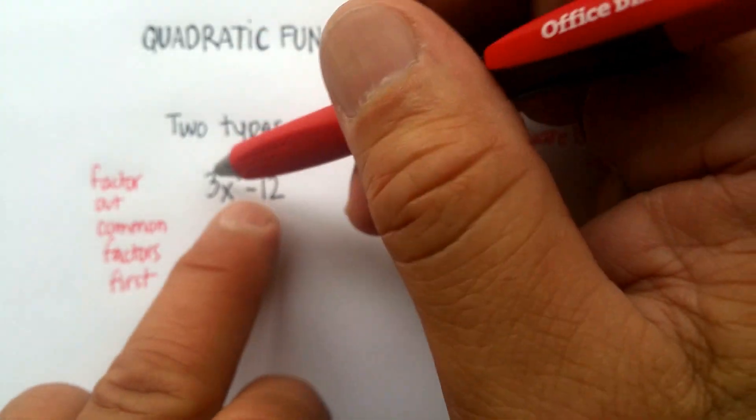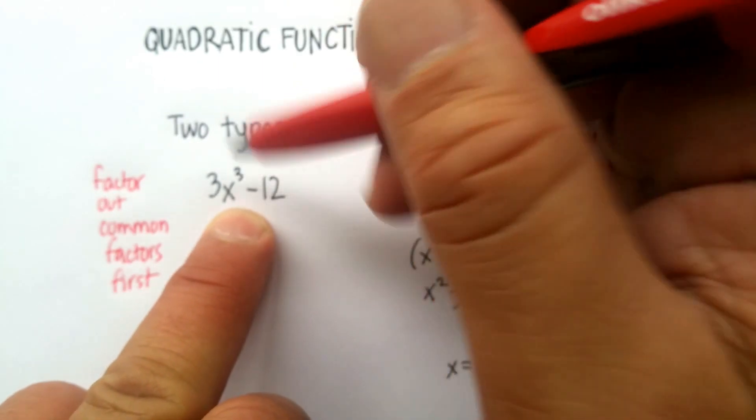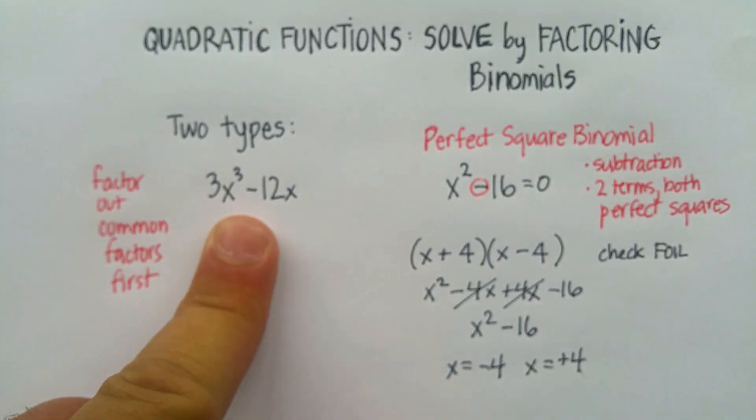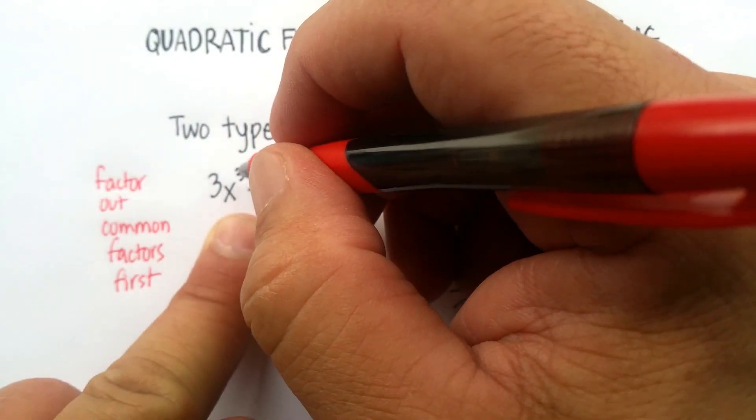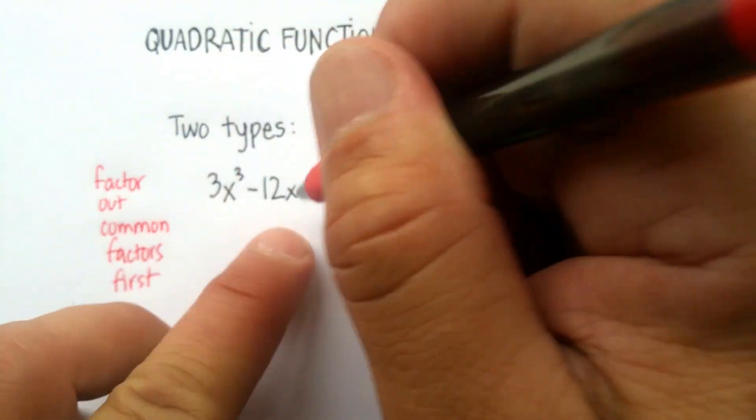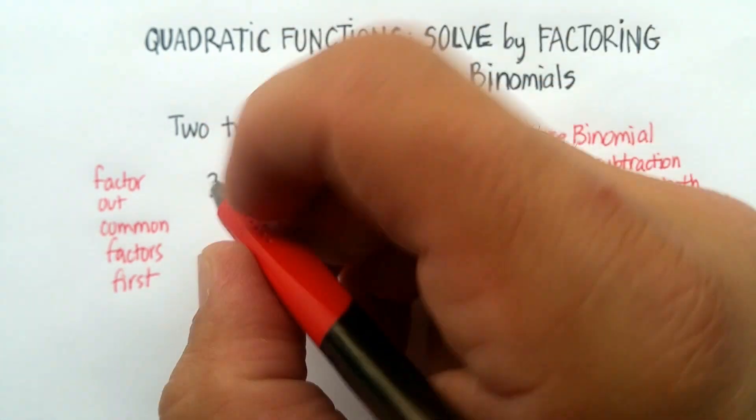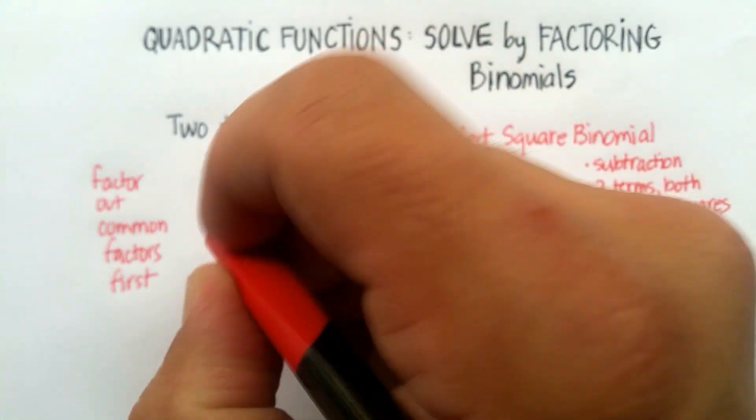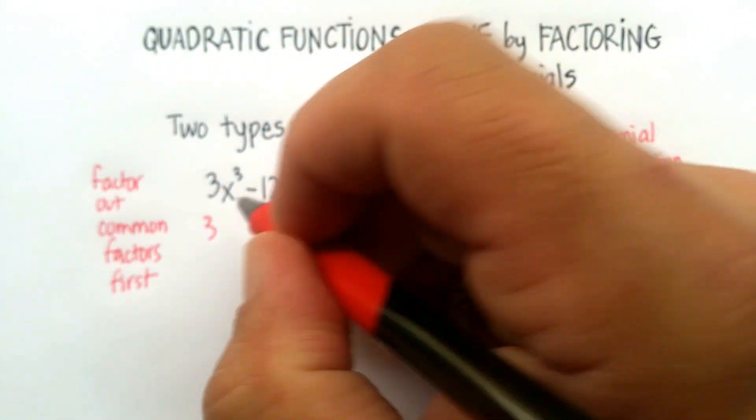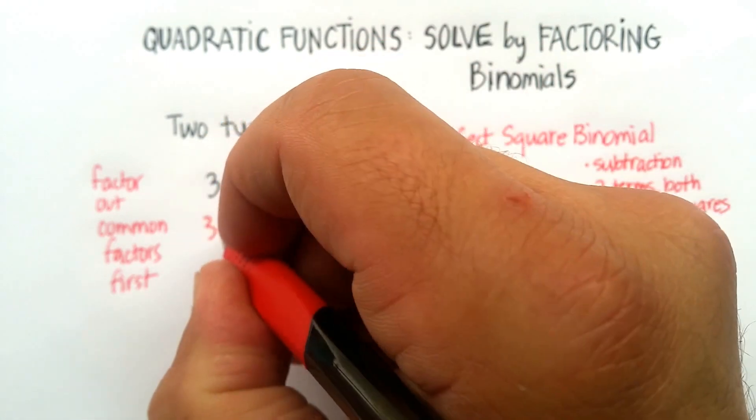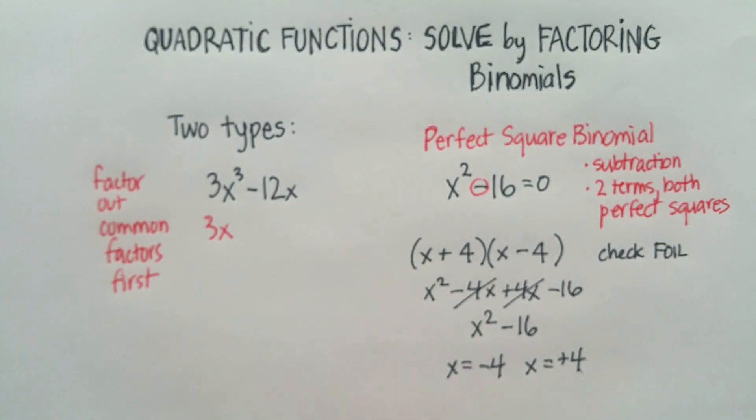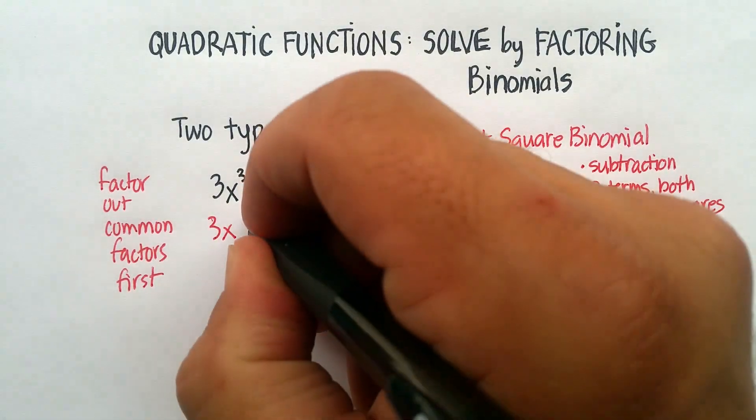When I look at 3x³ and 12x, I ask myself what is common in both of those terms. Well I know that one of my factors that's common is a 3, because 3 goes into 3 obviously but 3 also goes into 12. Another common factor is one of the x's. So I'm going to factor out 3x and then I'm going to look and see what's left over.